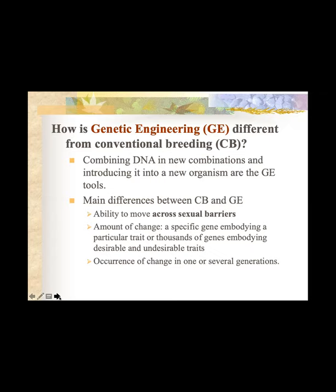Another limitation of conventional breeding is the longer period of time required — 10 to 15 years to release a variety. But genetic engineering or the newly introduced gene editing technology can accomplish the job within three to five years. Combining DNA in new combinations and introducing it into a new organism are the genetic engineering tools. In genetic engineering you can transfer a defined and specific gene to your target organism, whereas in conventional breeding you cannot regulate which genes transfer, and bad genes can also be transferred, making it not so specific.